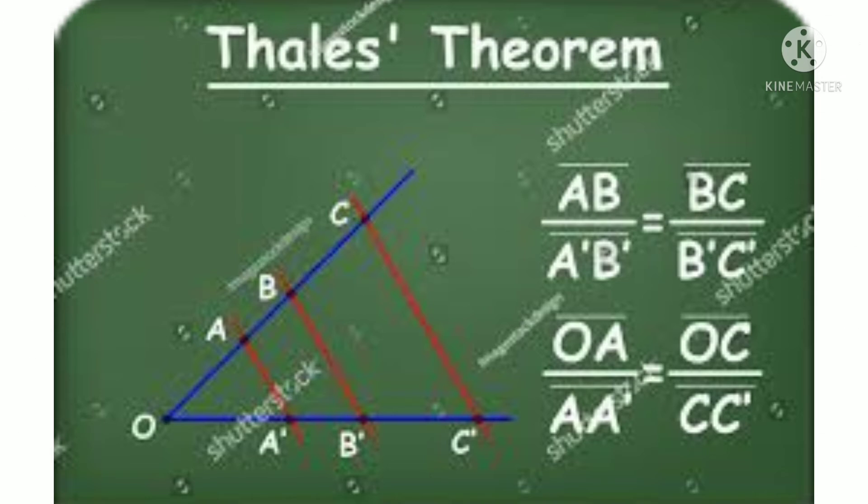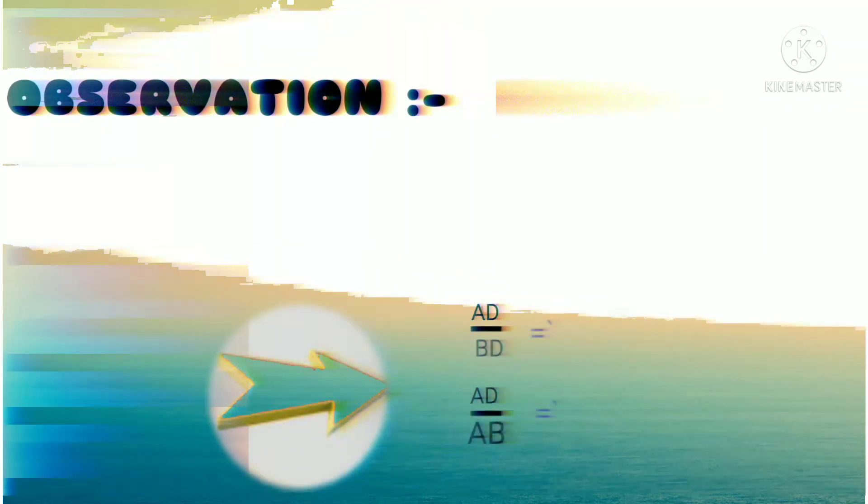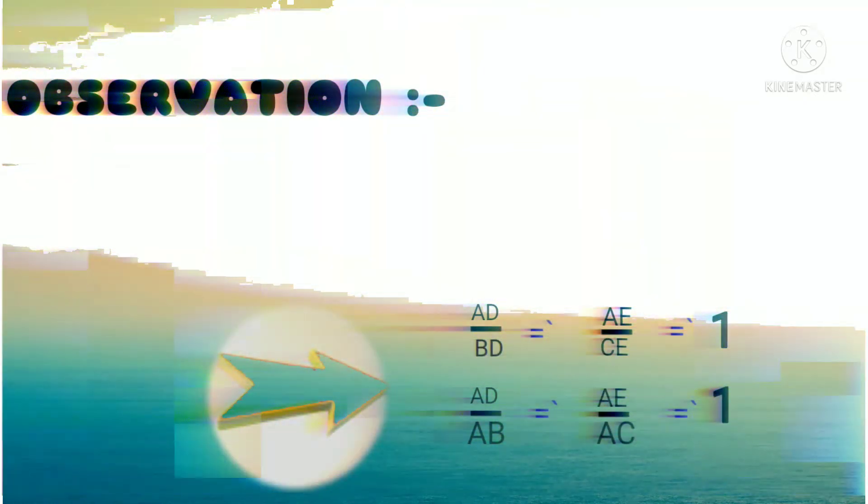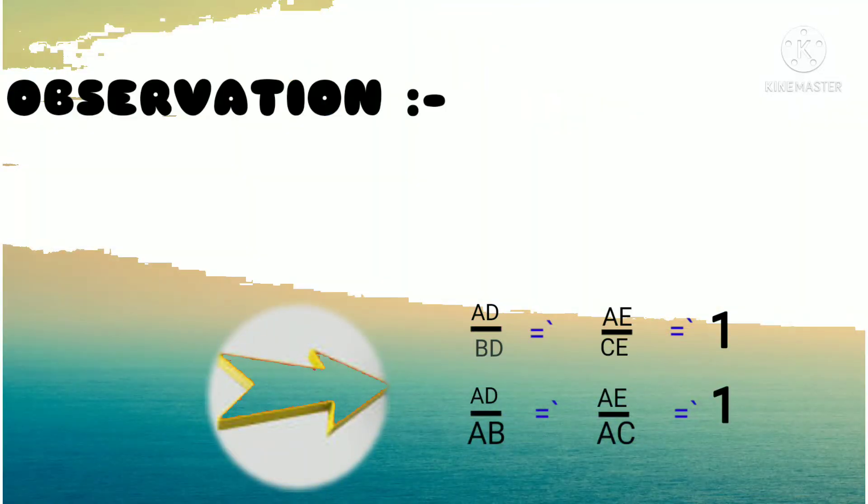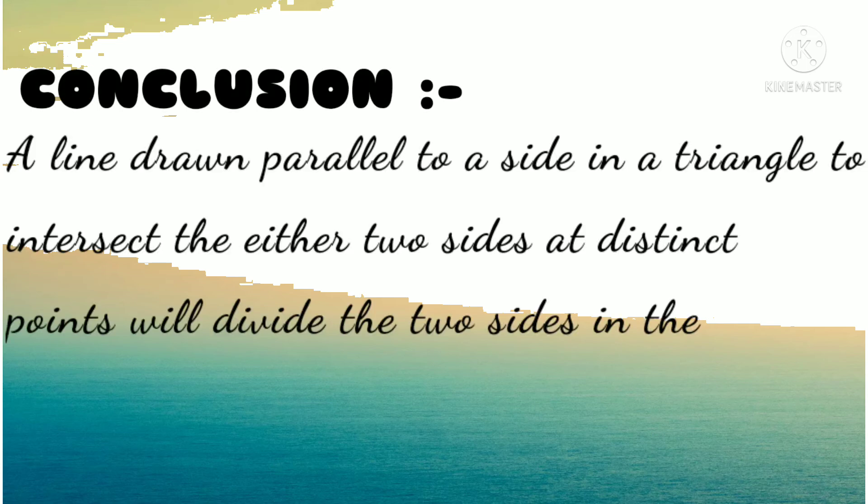Note your observations in your textbook. The observation we get is that the ratios are equal to one. Hence the conclusion obtained is that the ratios of two distinct sides of a triangle is always equal according to Thales.